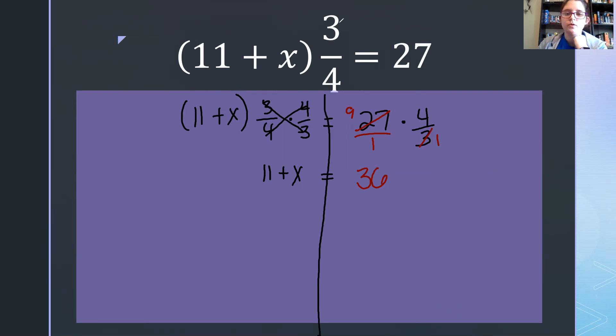Now I need to move my 11. It's a positive. There's nothing in front of it. So I know it's a positive. I undo positives with negatives. And we can think about it as subtraction. So a positive 11 and a negative 11 cancel. So x equals 36 minus 11 is 25.